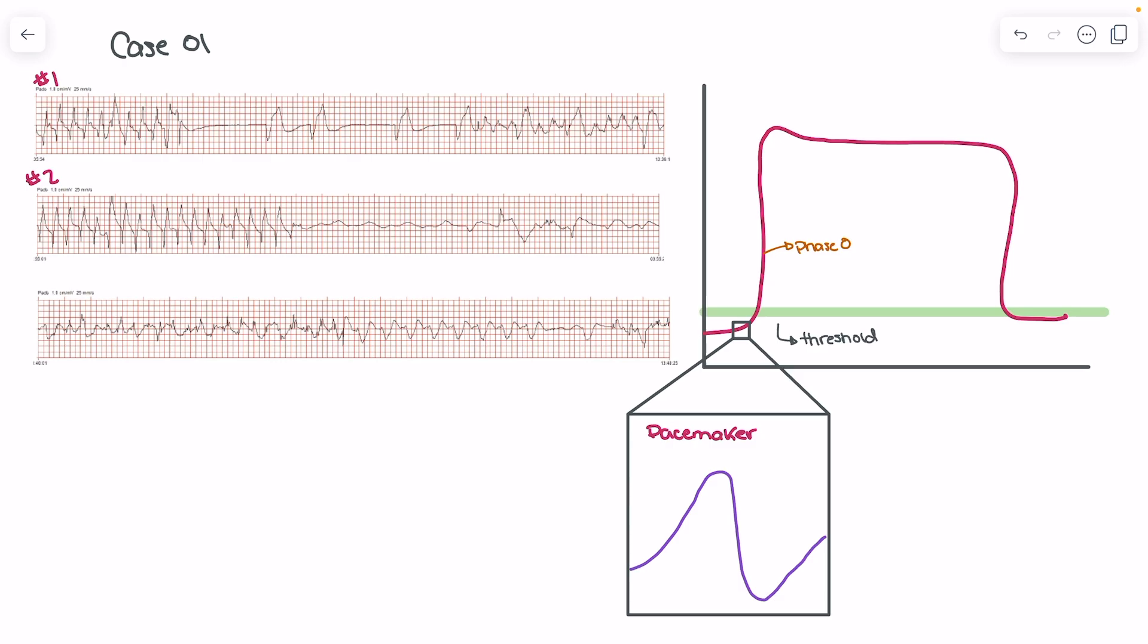What's important here is that we're seeing wide and slow complexes. And in rhythm interpretation number two, this is really predictive of hyperkalemia because we have that sine wave pattern, which is that wide, slow rhythm or the sine wave rhythm that we're seeing. So just as a recap, why are we getting that?